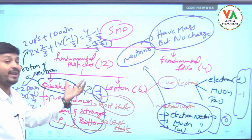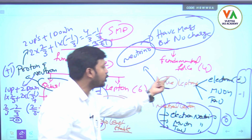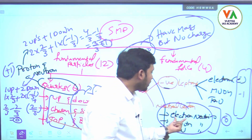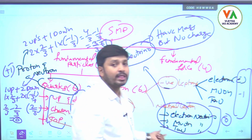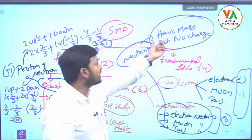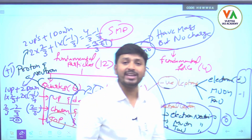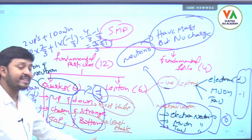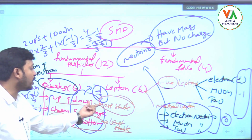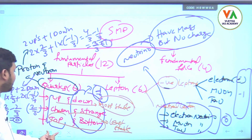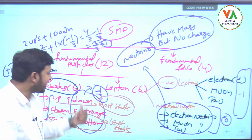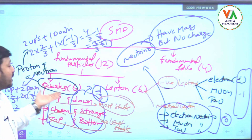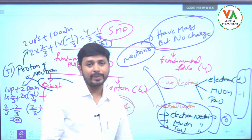So fundamental particles are divided into two groups: quarks and leptons. Leptons are divided into negatively charged leptons — electron, muon, and tau — and neutral leptons — electron neutrino, muon neutrino, and tau neutrino. These three neutrinos have mass but no charge. Quarks form protons and neutrons, while leptons (electrons) form the outer part of the atom.